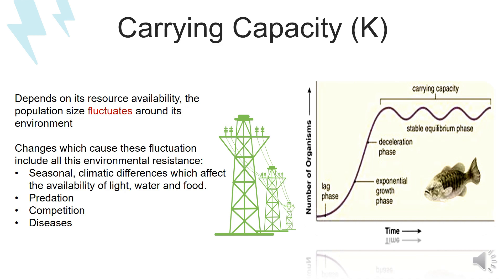The population size fluctuates around the carrying capacity depending on resource availability. Changes that cause this fluctuation include all forms of environmental resistance — for example, seasonal and climatic differences affecting the availability of light, water, and food, as well as predation, competition, and disease.